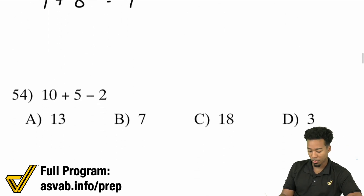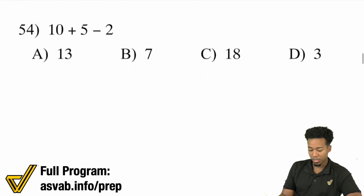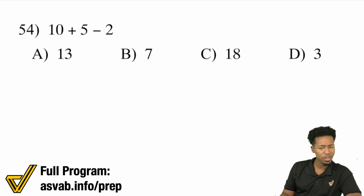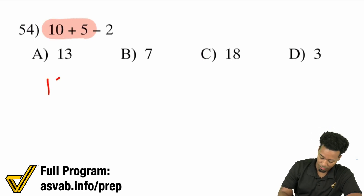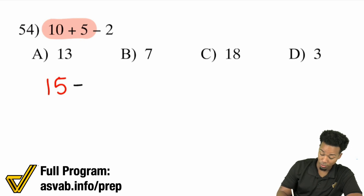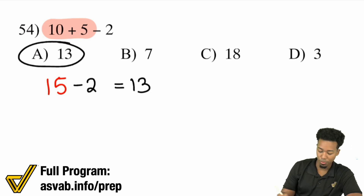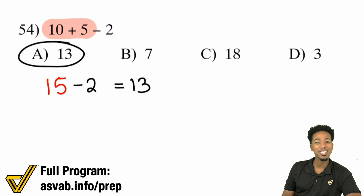Number 54: 10 plus 5 minus 2. This one's pretty straightforward — we actually don't have to deal with negatives here. We'll just do 10 plus 5, which is going to be 15. Then we subtract the 2, and that's going to be 13. That one was pretty easy.